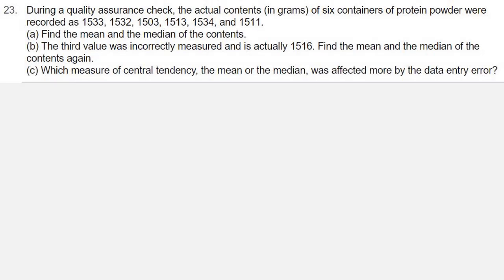During a quality assurance check, the actual contents in grams of six containers of protein powder were recorded as 1533, 1532, 1503, 1513, 1534, and 1511.